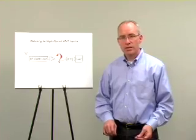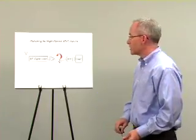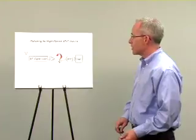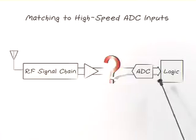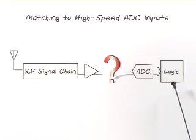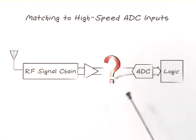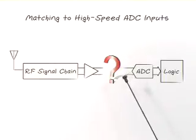In any high-frequency signal chain, like communication receivers or a spectrum analyzer, there is a high-frequency portion of the design and a baseband section of the design where the signal is converted to the digital domain. The two portions of the design are stitched together at the ADC inputs.